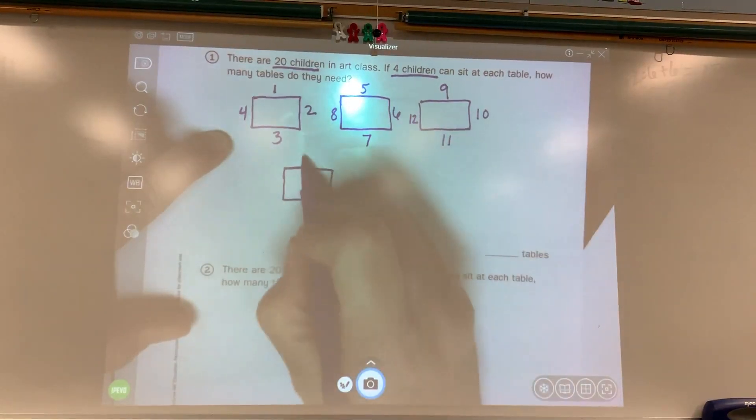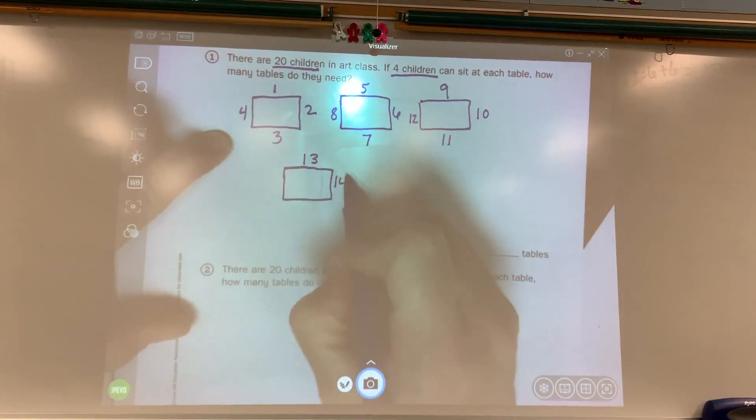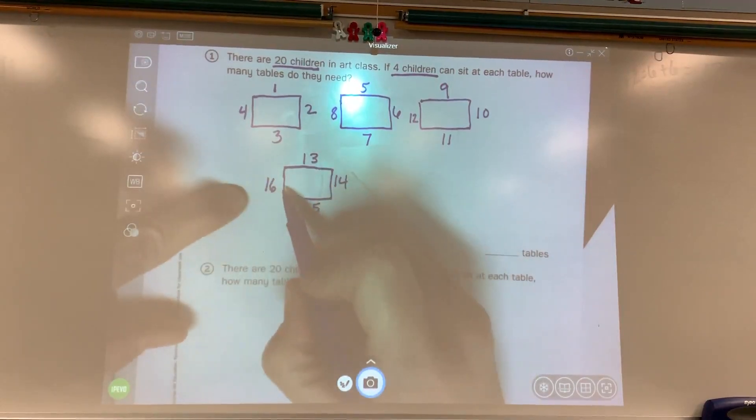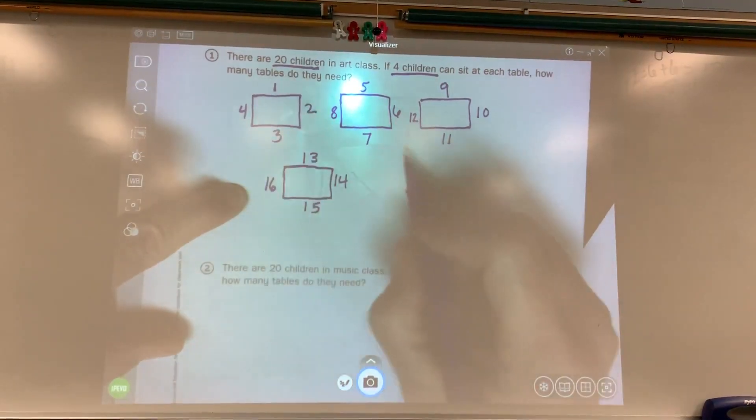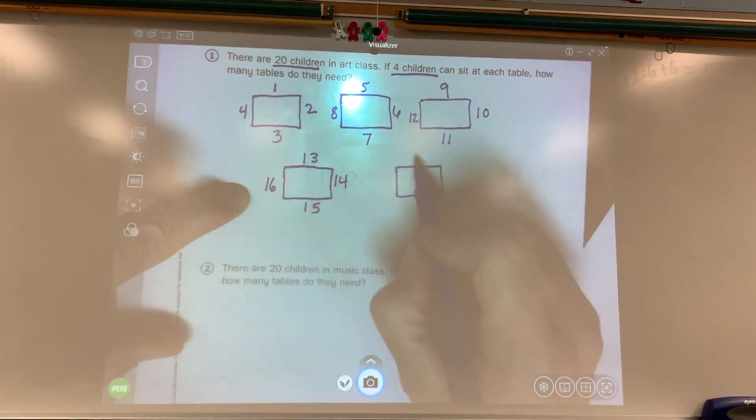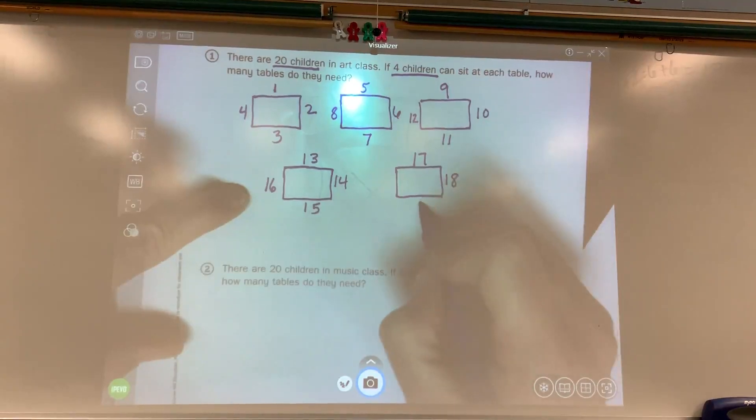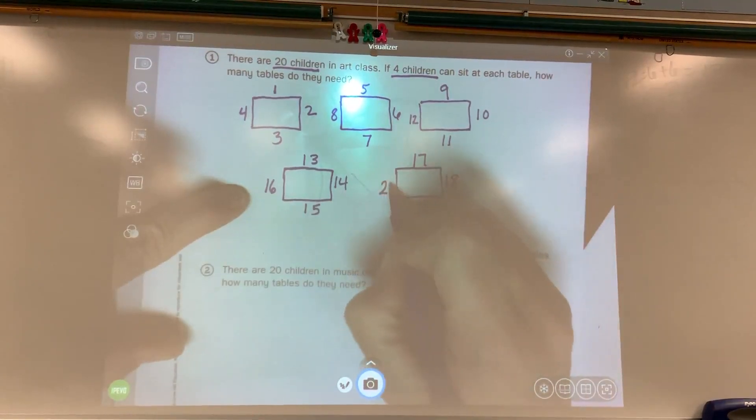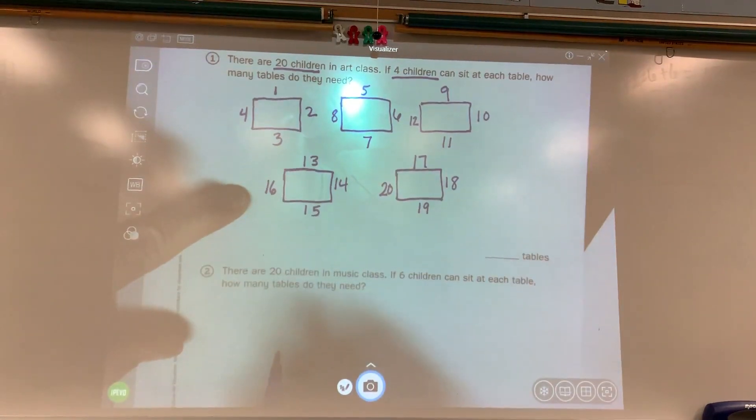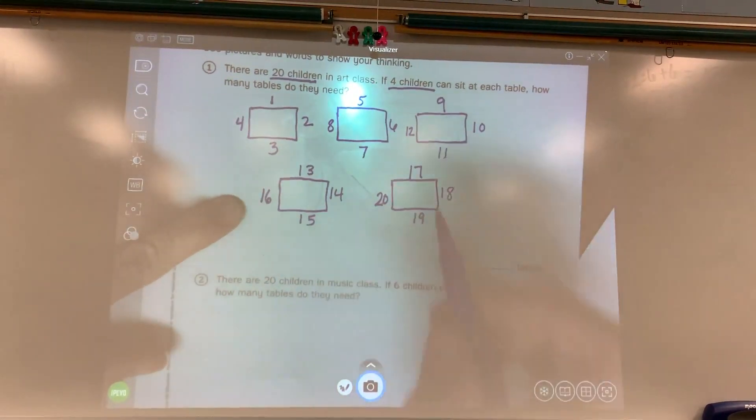I did it at 12. So 13, 14, 15, 16. Well, do I need another table? I do because there's 20 children. 17, 18, 19, 20. Okay. I can stop because all 20 children are now sitting at a table. So let's count how many tables I needed.